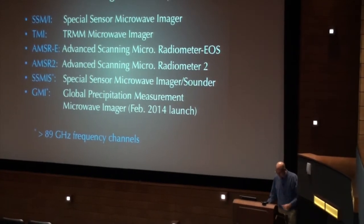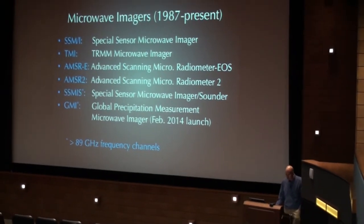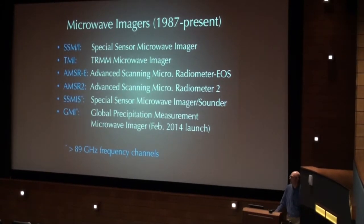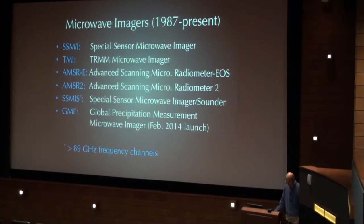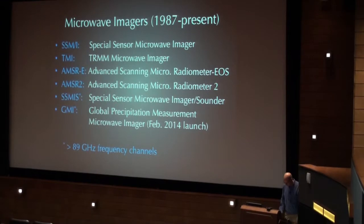If we look at the microwave imager dataset, the historical dataset, we actually have a pretty strong record now going from 1987 onward. I've listed here a lot of the microwave imagers that have flown on different platforms from the SSMI in 1987, the 80s, the 90s, all the way down to the global precipitation measurement mission microwave imager, which is the GMI, which will actually launch in a couple of months, February 2014.